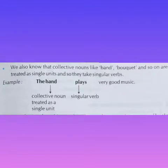We also know that collective nouns — like band, bouquet, bunch, army, and so on — are treated as single units, and so they take singular verbs. For example: 'The band plays very good music.' Here, 'band' is a collective noun referring to musicians, so we use the singular verb 'plays' — adding S to 'play.'